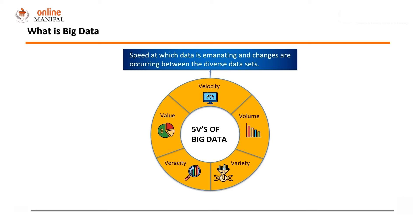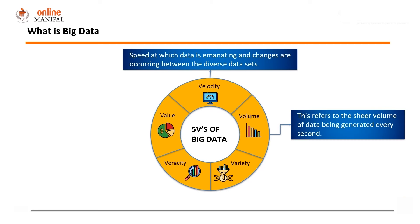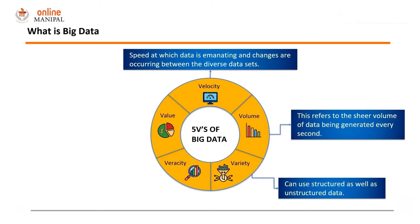Coming back to the five Vs of big data: velocity is basically the speed at which the data gets generated. In today's world, we have multiple petabytes of data getting generated every second, and the speed at which the data gets generated represents the velocity of big data. Volume — multiple petabytes of data per second — means there is a huge volume of data getting generated from different sources, and that constitutes the second V of big data.